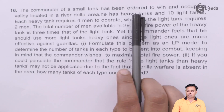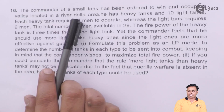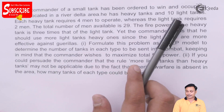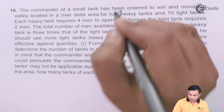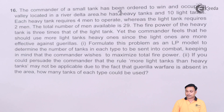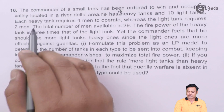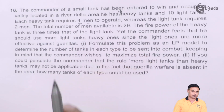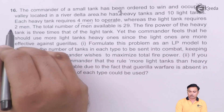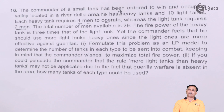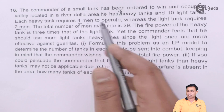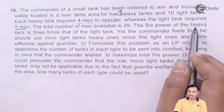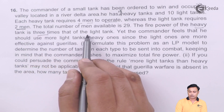The commander of a small tank unit has been ordered to win and occupy a valley located in the river delta area. He has 15 heavy tanks and 10 light tanks. Each heavy tank requires four men to operate, whereas a light tank requires only two men. The total number of soldiers available is 29. The fire power of the heavy tank is three times that of the light tank.